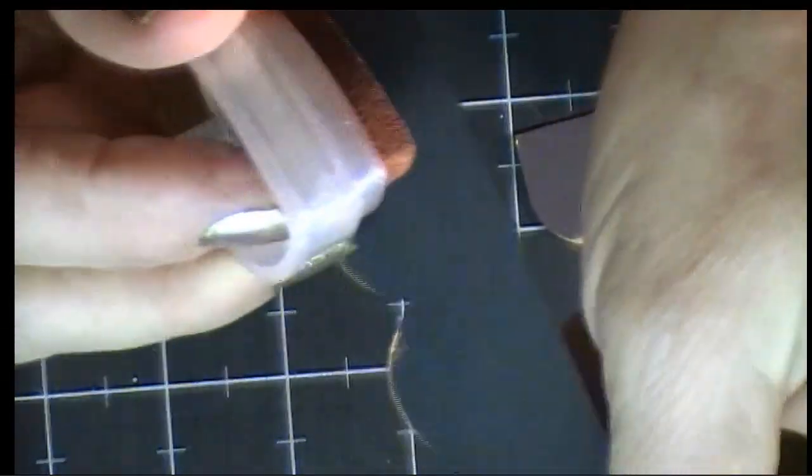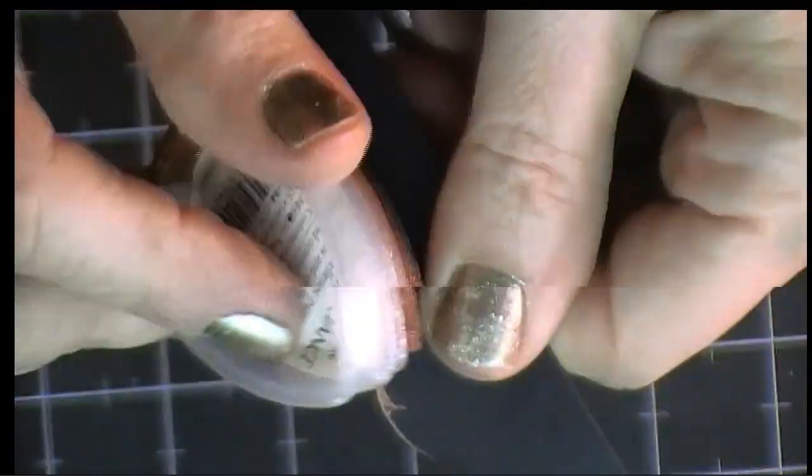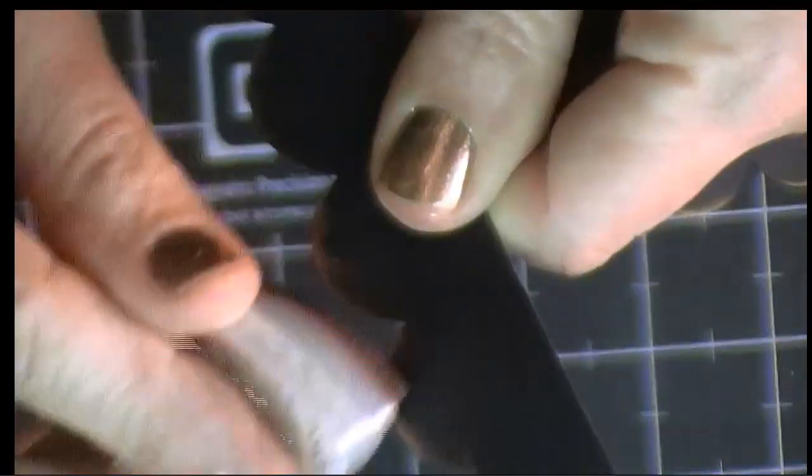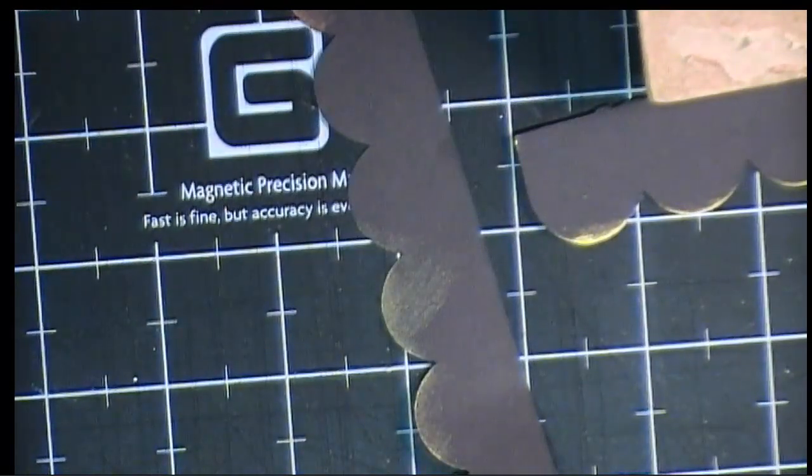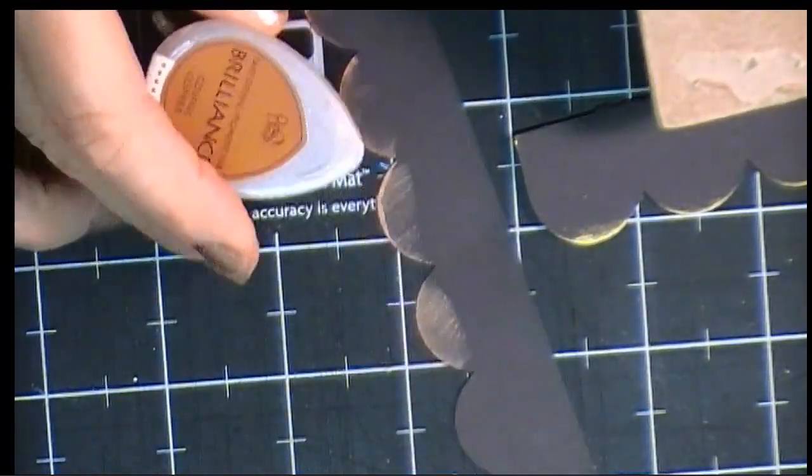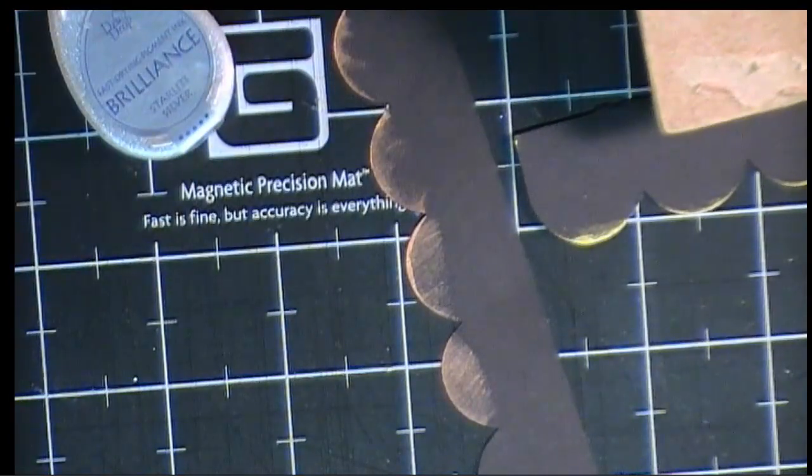Then platinum, which has a kind of brighter, whiter look to it, which I thought could be kind of cute if you're doing a winter scene and you want it to look a little bit snowy.